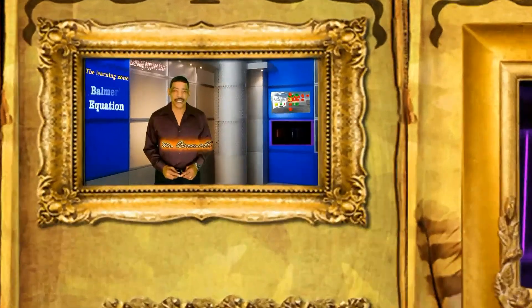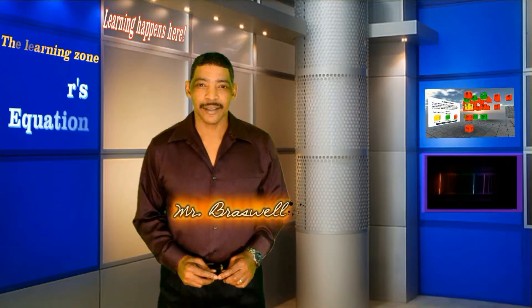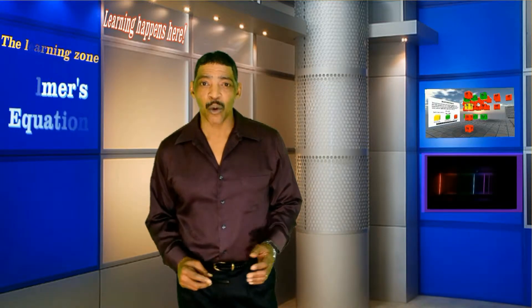Hi, welcome to the learning zone. Hi, Mr. B. In this video, I will explain how Balmer's formula may be used to identify the four wavelengths found in hydrogen's bright line spectrum.